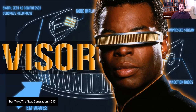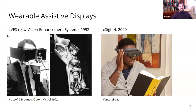Ironically, LeVar Burton the actor hated the visor because in real life that prop practically blinded him. But this isn't just science fiction — the scientific community has been working on tools called wearable assistive displays for decades. Here I'm showing the Low Vision Enhancement System, or LVES, proposed in the 1990s, and the eSight 4, made in 2020. Both perform overall image contrast enhancement through video displays: they take images from a video camera, make them easier to see, and put them on a screen in front of the user's eyes.